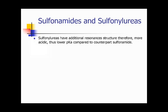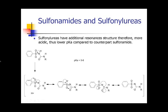Sulfonylureas are very popular in drugs these days. They have an additional resonance structure, which causes a decrease in the pKa value. Here's your prototypical sulfonamide, but now you have a urea — an N-C-double-bond-O-N — linked together: sulfonylurea. This proton has resonance structures spread across, and thus compared to a sulfonamide, which we typically think of as around pKa 9, this is much lower — around 5 to 6.